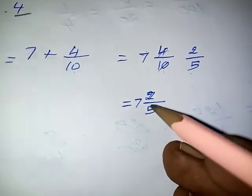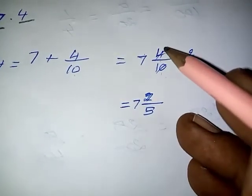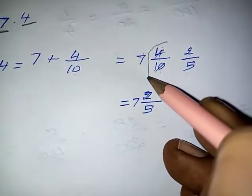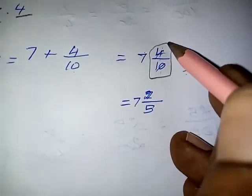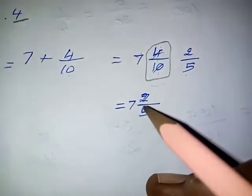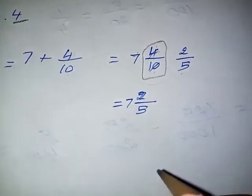We simplify only the decimal part of the given decimal. So the required fraction is 7 and 2 by 5.